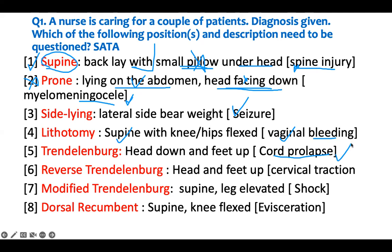Reverse Trendelenburg is the opposite - if Trendelenburg has head down and feet up, in the reverse form, head goes up and feet goes down. So if both the head and the feet are up, that's wrong. You can use reverse Trendelenburg for cervical traction - you raise the head up and the feet down, so they dangle. That is the reverse Trendelenburg position so that they don't aspirate. Head up, feet down - not head and feet both up. So that patient we have to intervene.